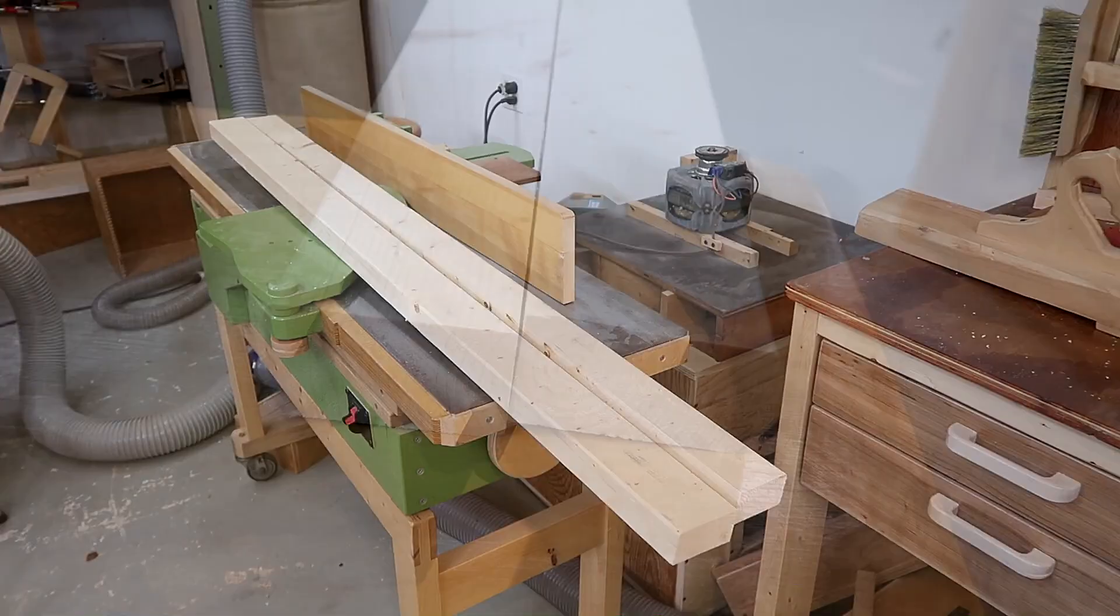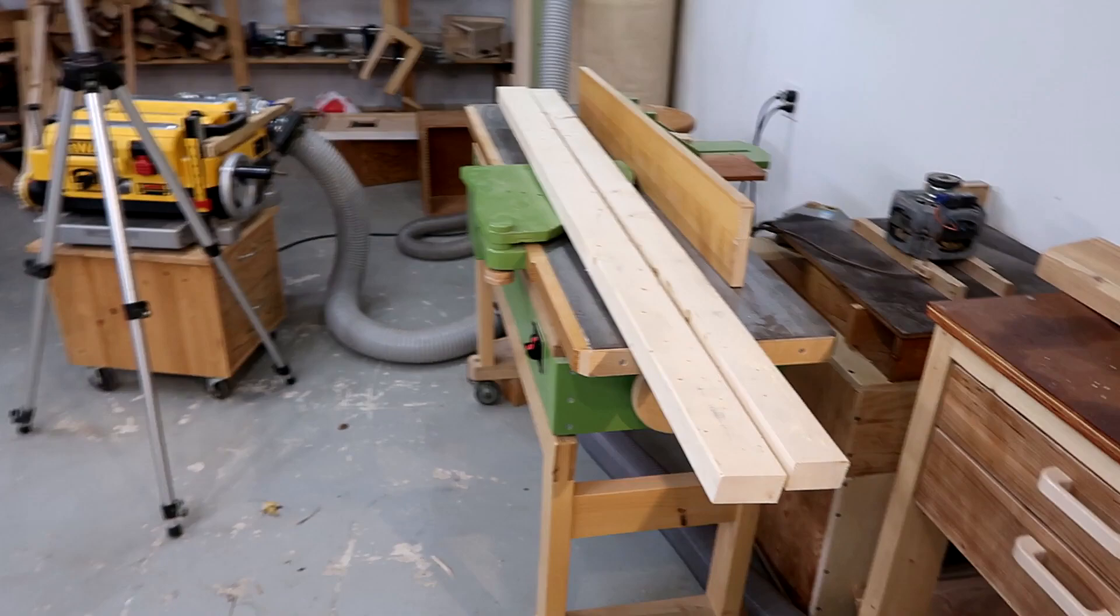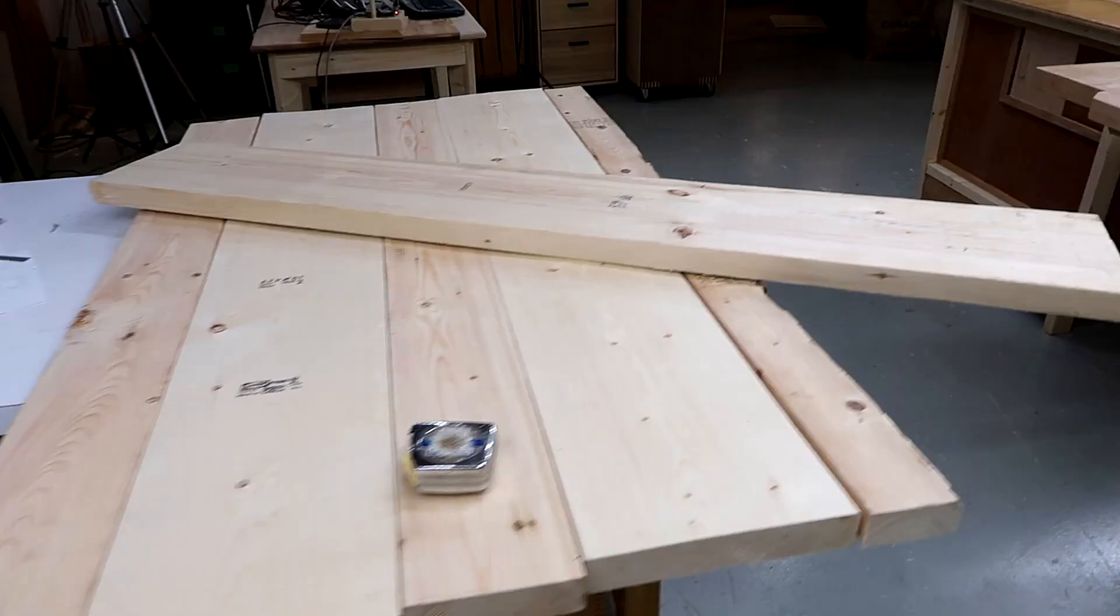I was about to run this twisted wood over the jointer to plane out the twist, but then I realized if it's twisted now it can twist more or untwist later and that could give this whole tabletop a very slight twist. So I got another piece of wood that I'll use instead.